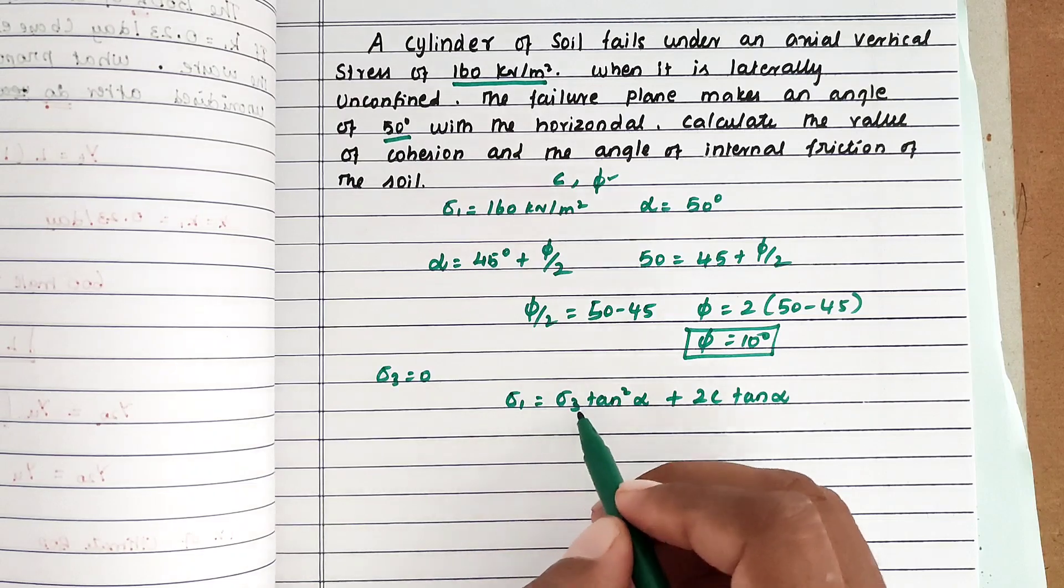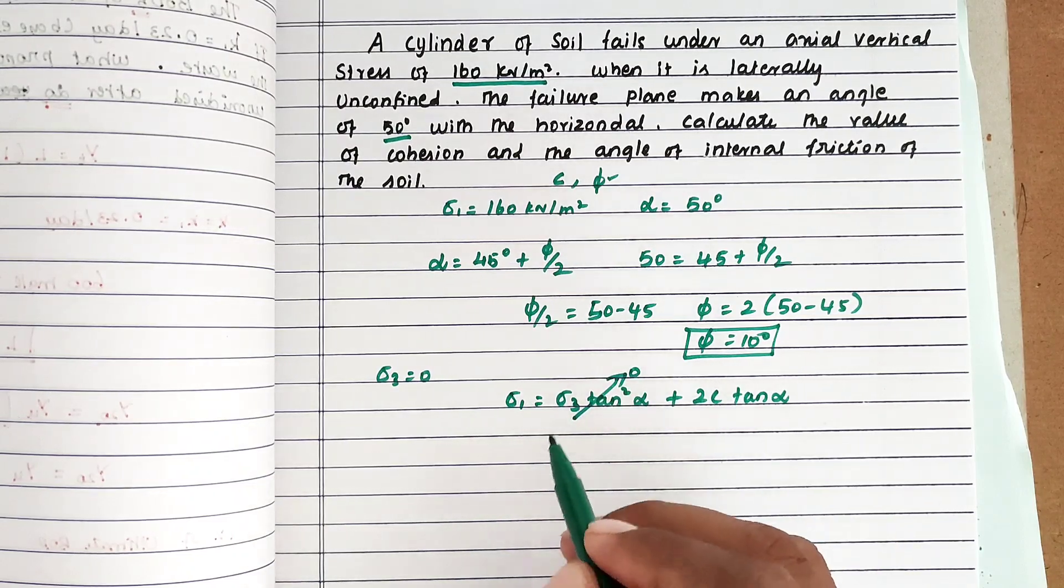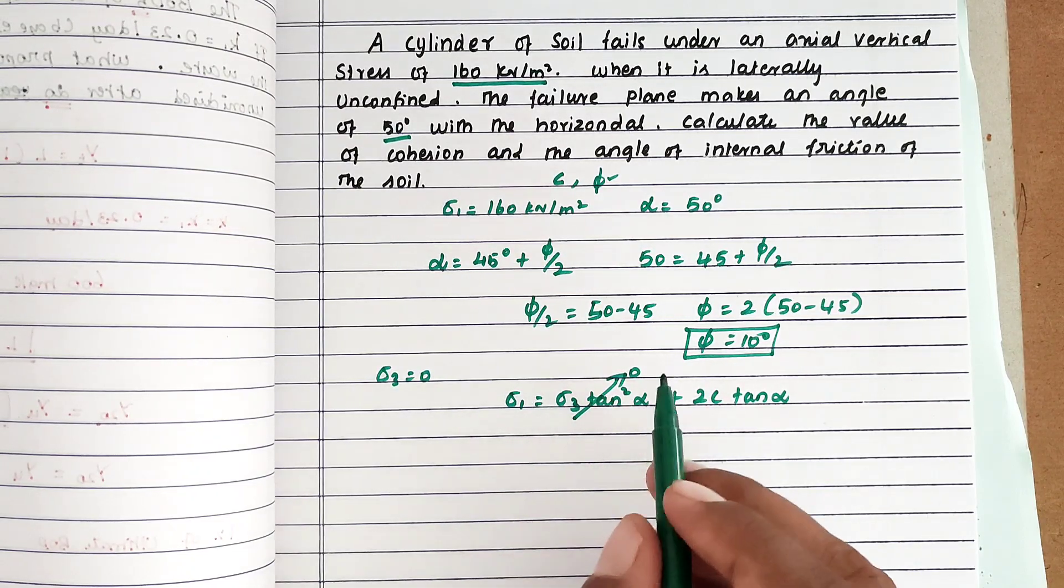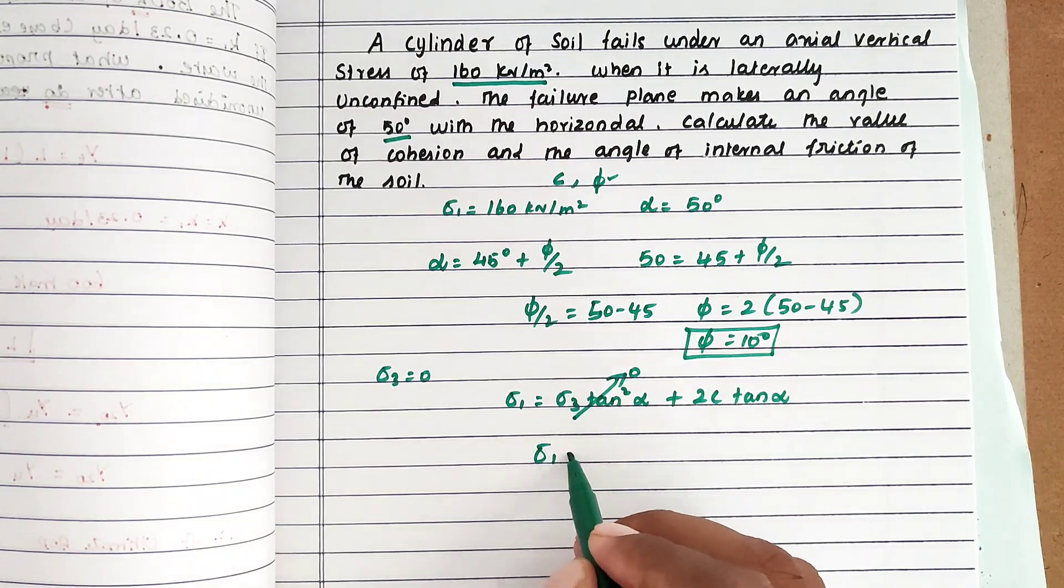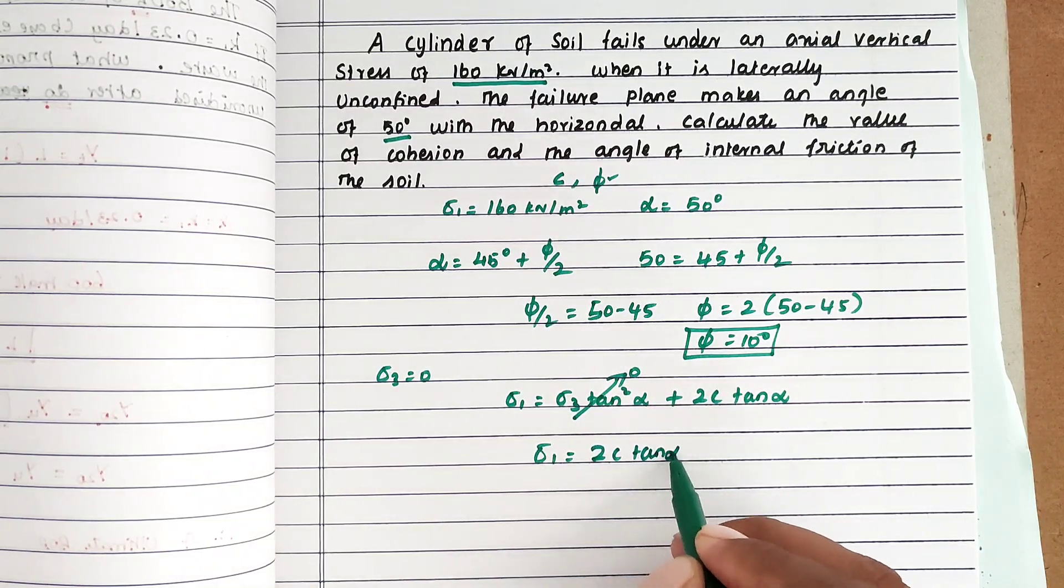From that, this term is 0 because sigma 3 is 0 when the soil is unconfined. So now sigma 1 equals 2c tan alpha.